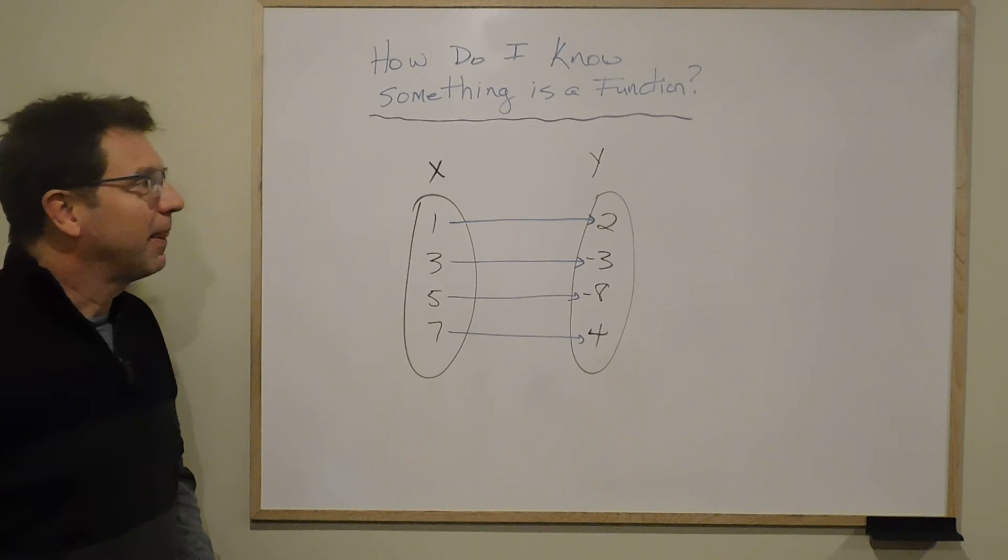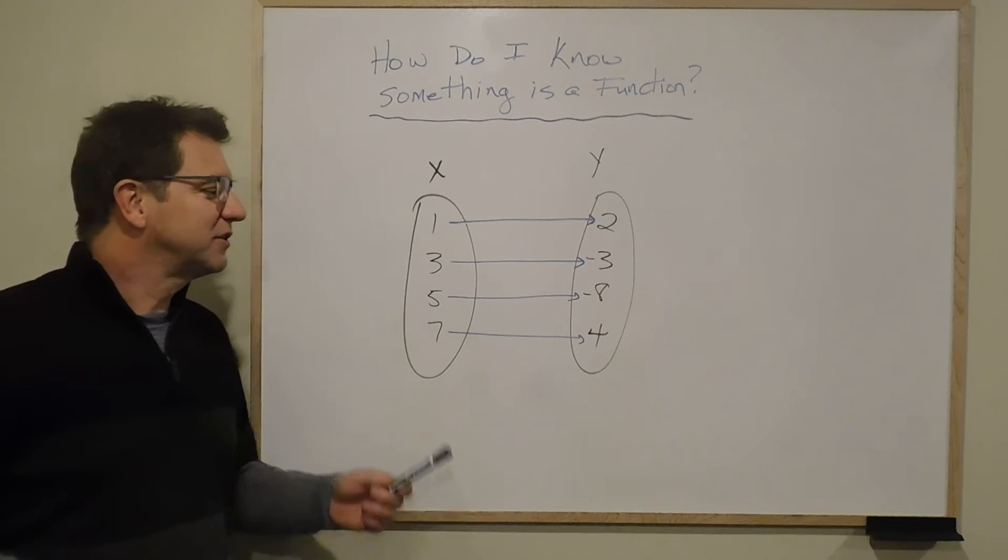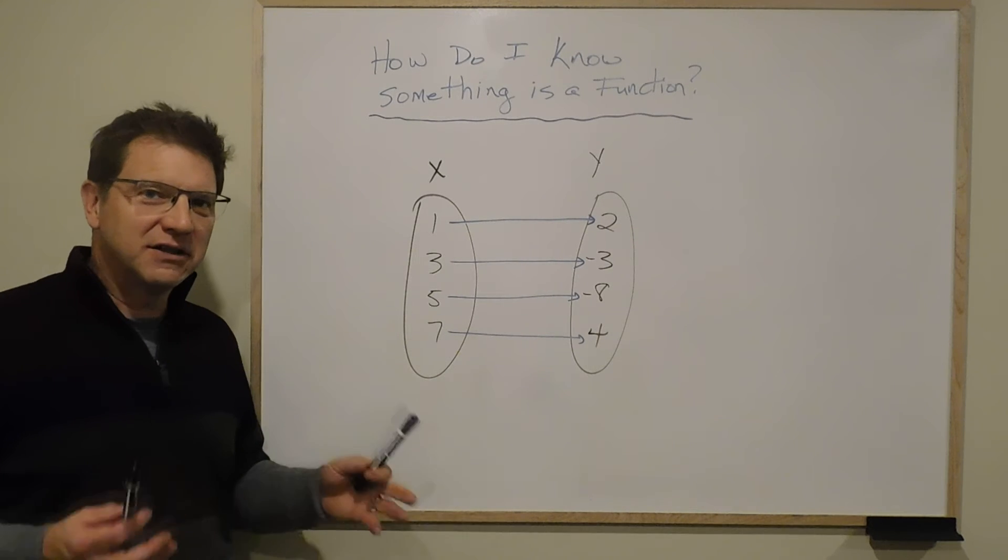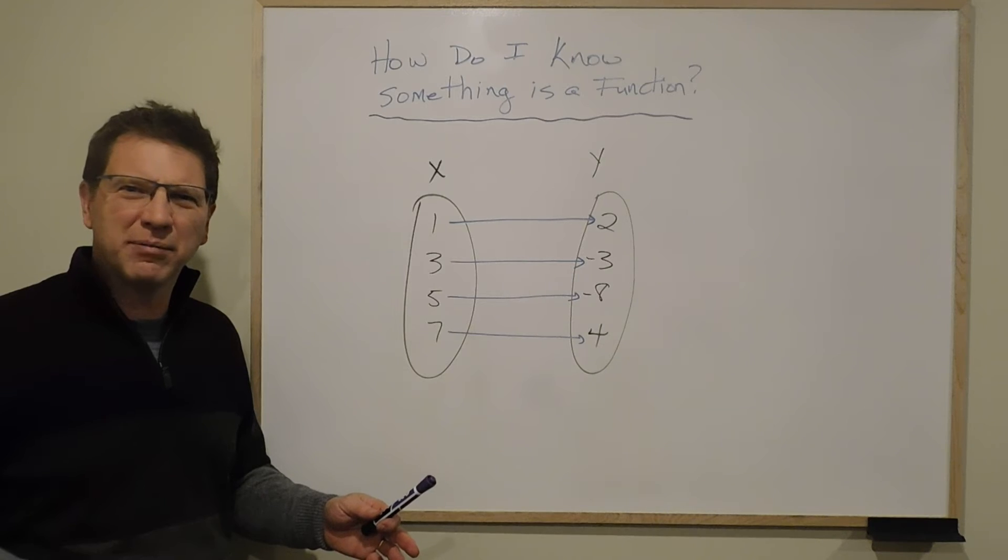Now, if I had something set up such that an x value could have two possible y values, it's not a function. You might say, when might that actually happen, right?